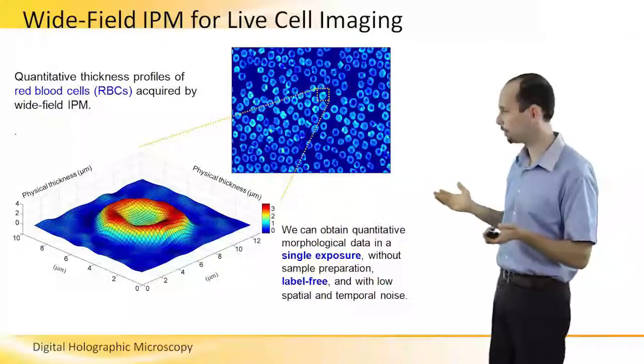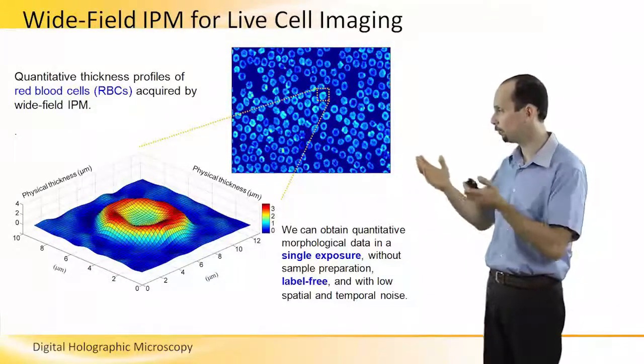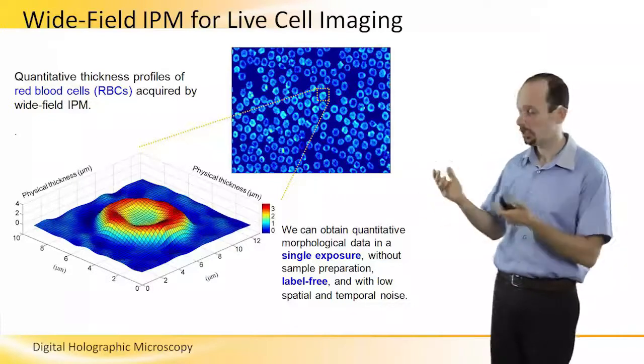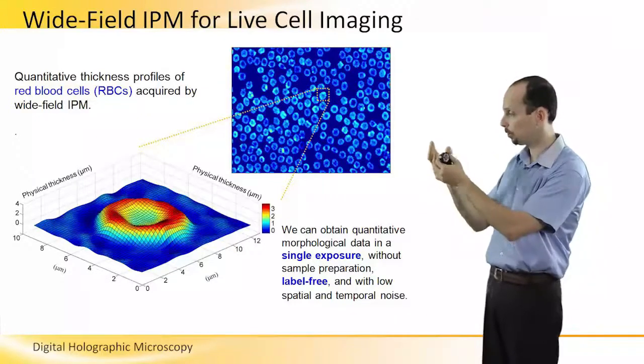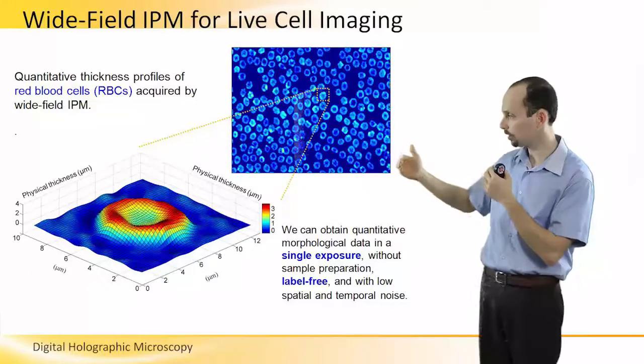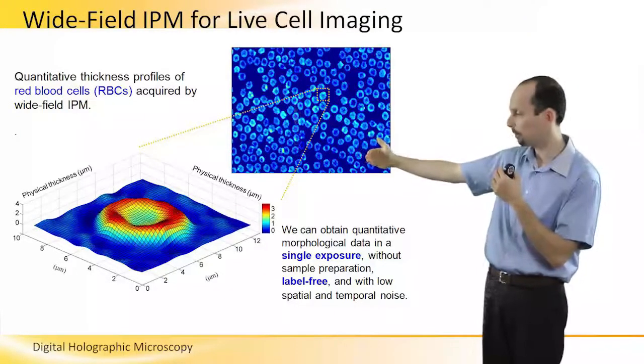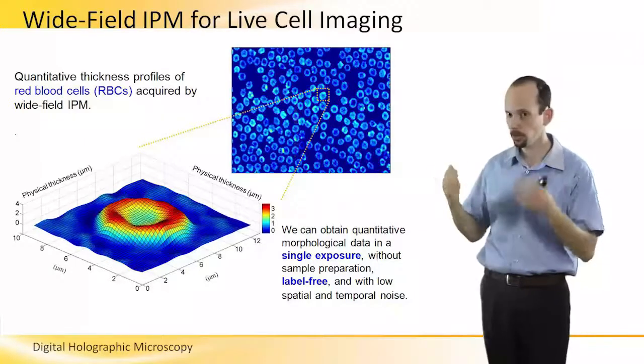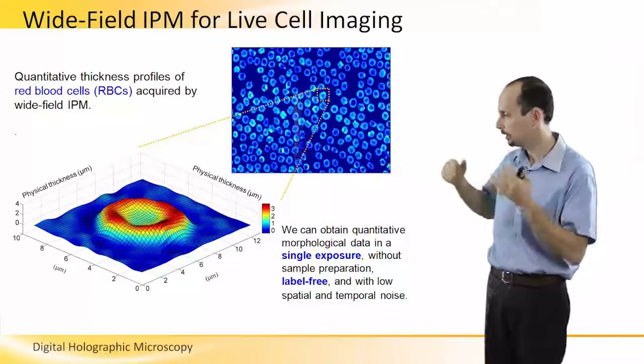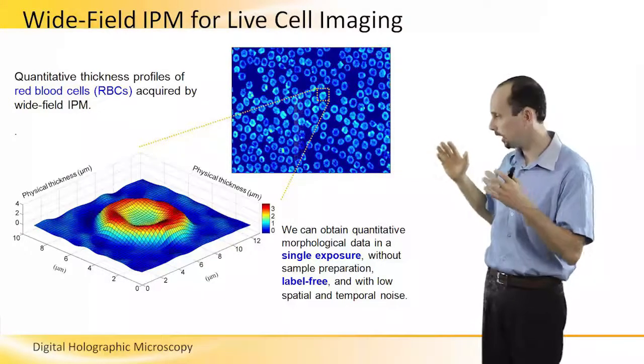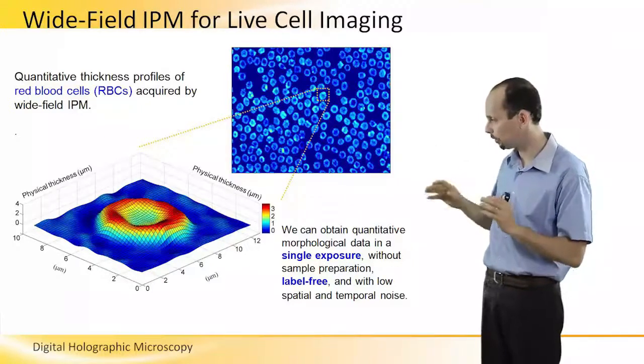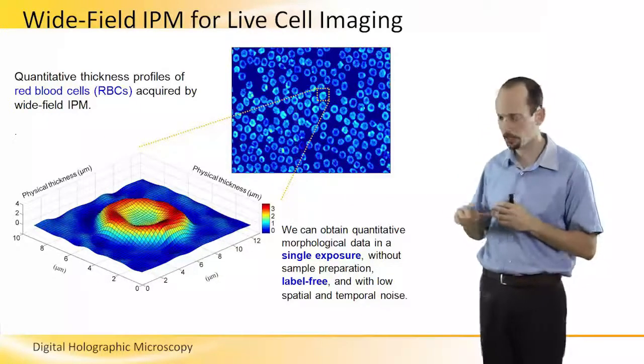As an example, you can see here, wide-field interferometric phase microscopy, IPM, for live cell imaging. You can see here that using one off-axis hologram, I can process it into the phase profile of the sample, as you can see here, without using any contrast agents. I can see the red blood cells in this example, without using any external labeling, and still get excellent contrast between the entire cell and its surrounding.